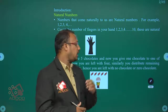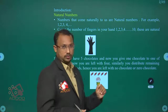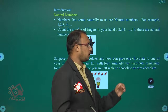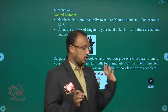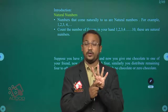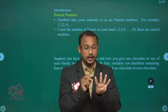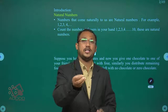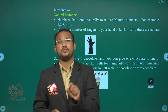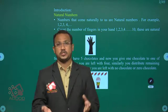For example, suppose you have five chocolates. You give one chocolate to a friend — now you're left with four. You distribute the remaining four to four other friends, and you're left with zero chocolates. By counting the chocolates, you know how many are there with you. That is the concept of natural numbers.